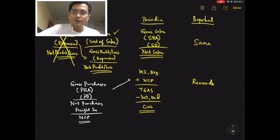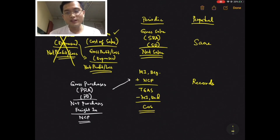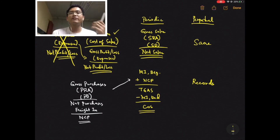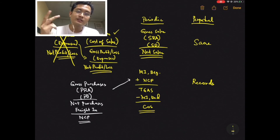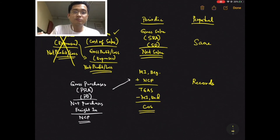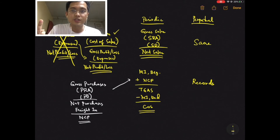So that's for the cost of sales. Again, for periodic we are using a formula. But for perpetual, you have it in your records because you get to record cost of sales every time you make a sale — there's an entry with cost of sales. And then you will get the difference between your net sales and cost of sales to get your gross profit or gross loss.